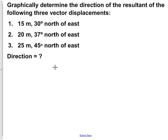Graphically determine the direction of the resultant of the following three vector displacements. One: 15 meters, 30 degrees north of east. Two: 20 meters, 37 degrees north of east. Three: 25 meters, 45 degrees north of east.